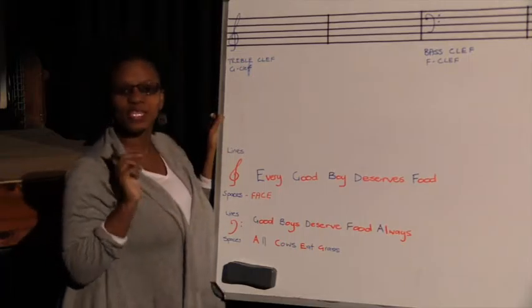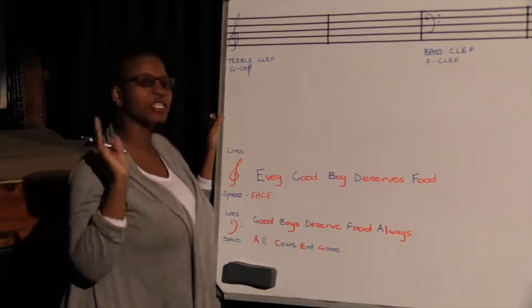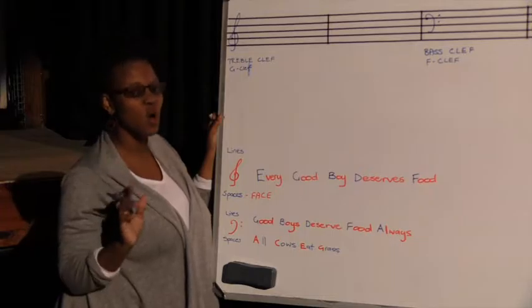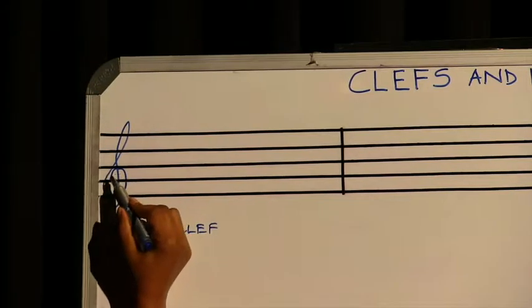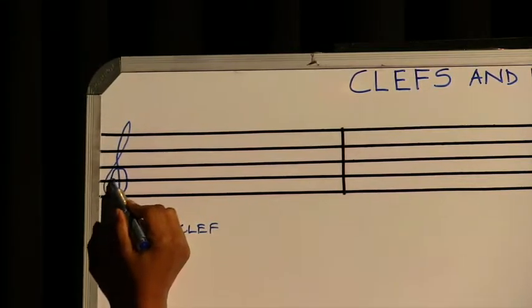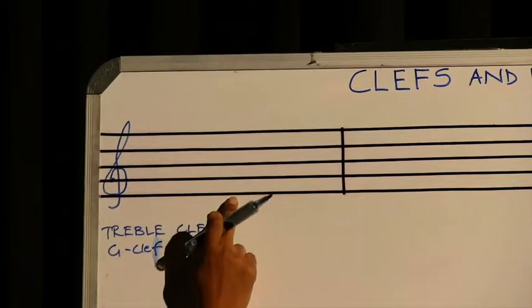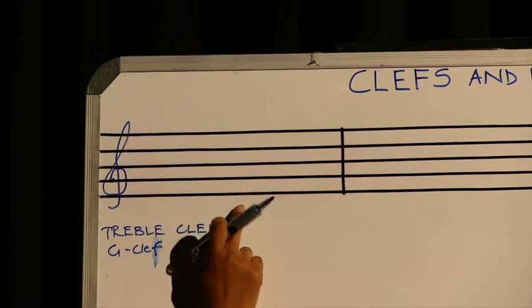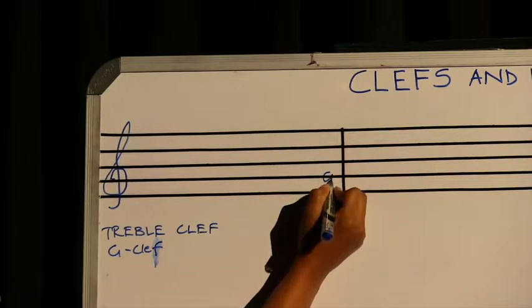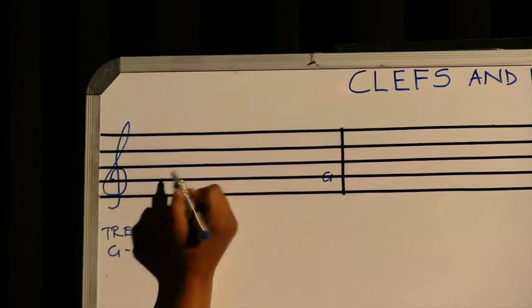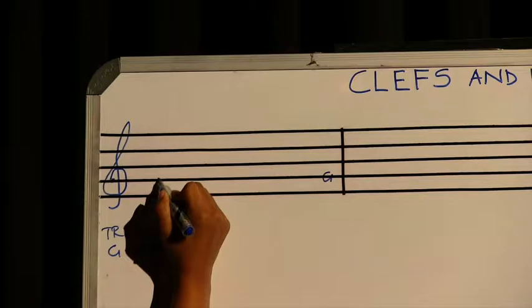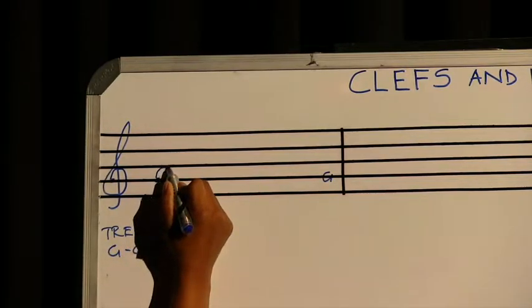The reason why they call it the treble clef or the G clef is because you start drawing it on the G line. So the second line from the bottom on our staff is called a G, and we start drawing it from the G line. So we make a dot there on the G line and go all around it, finish it off just like that.